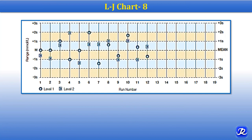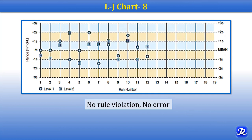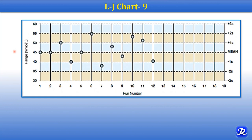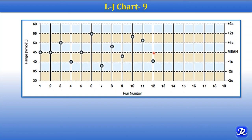In this LJ chart for two levels of control, there is no rule violation and no error. In LJ chart number 8, only one level of control is used. Looking at all the control measurements, there is no rule violation seen. You should write: no rule violation and no error.